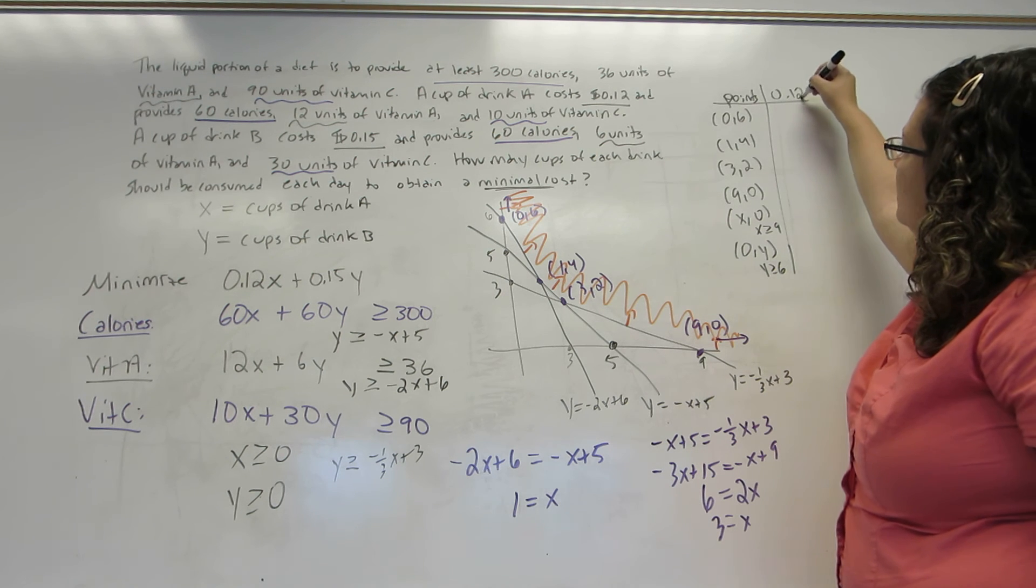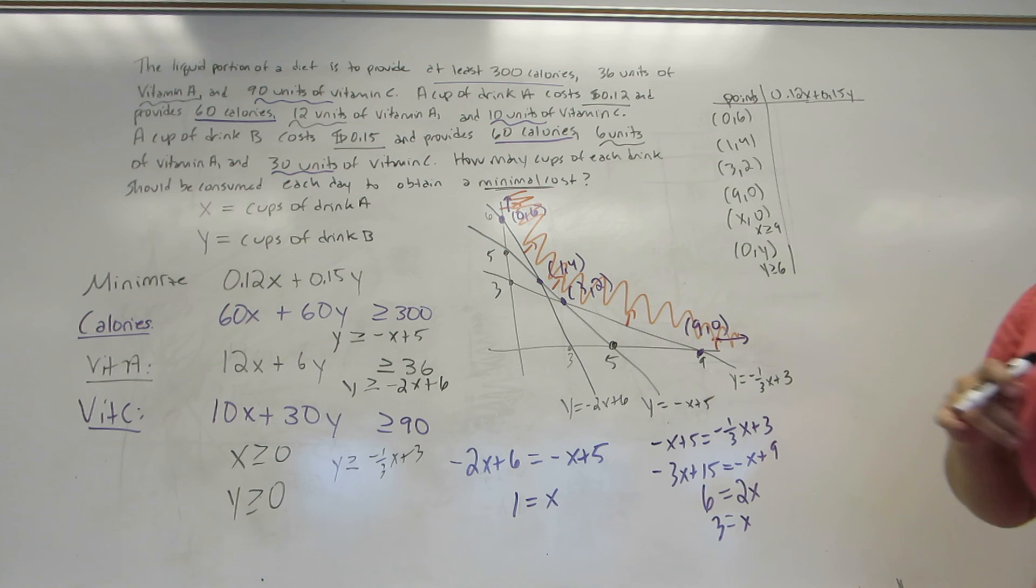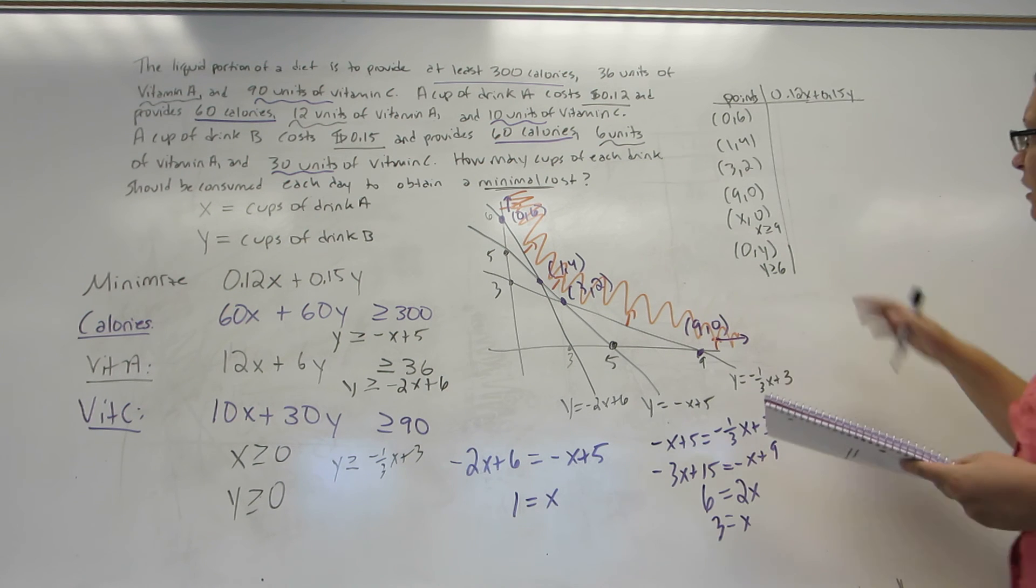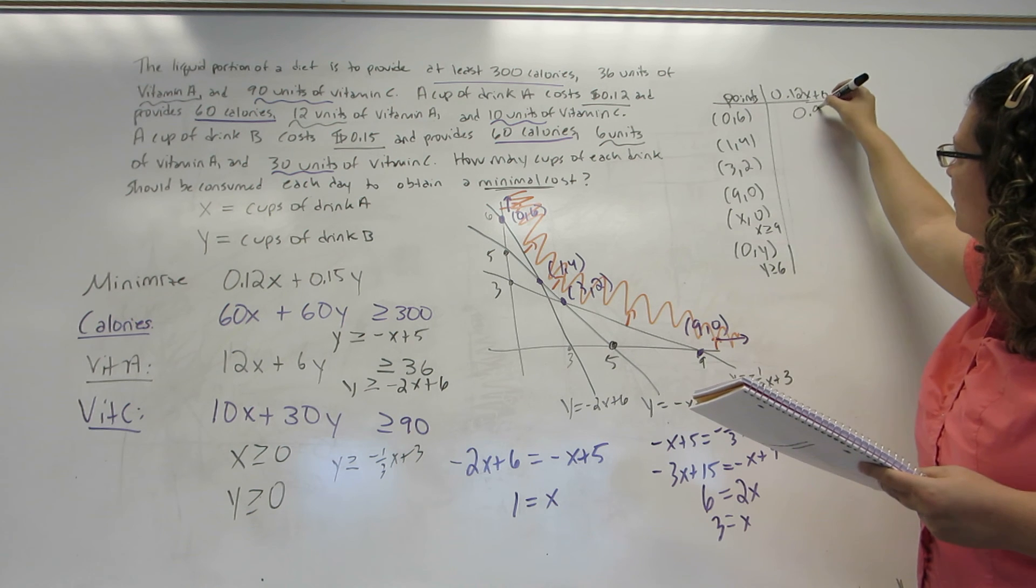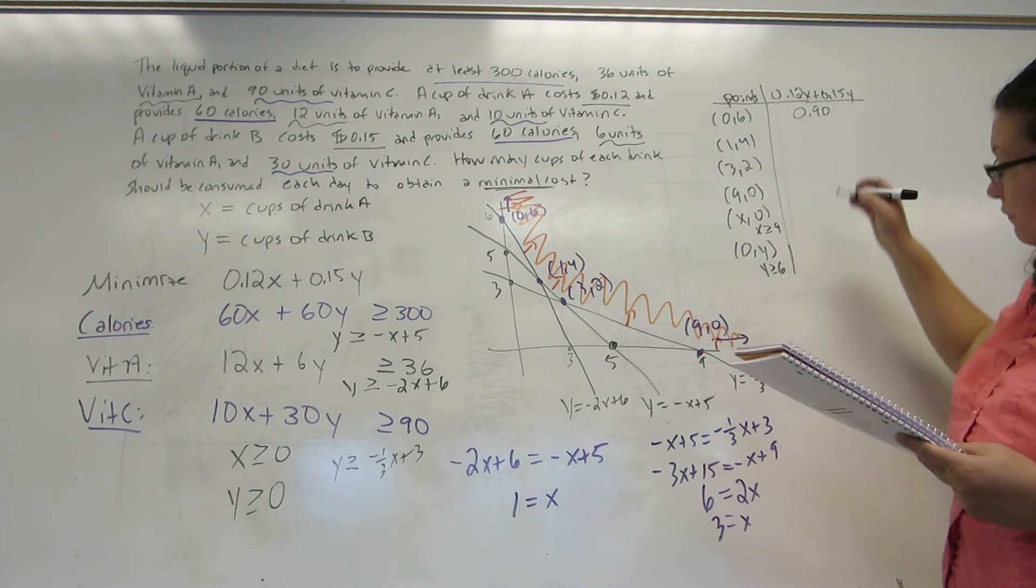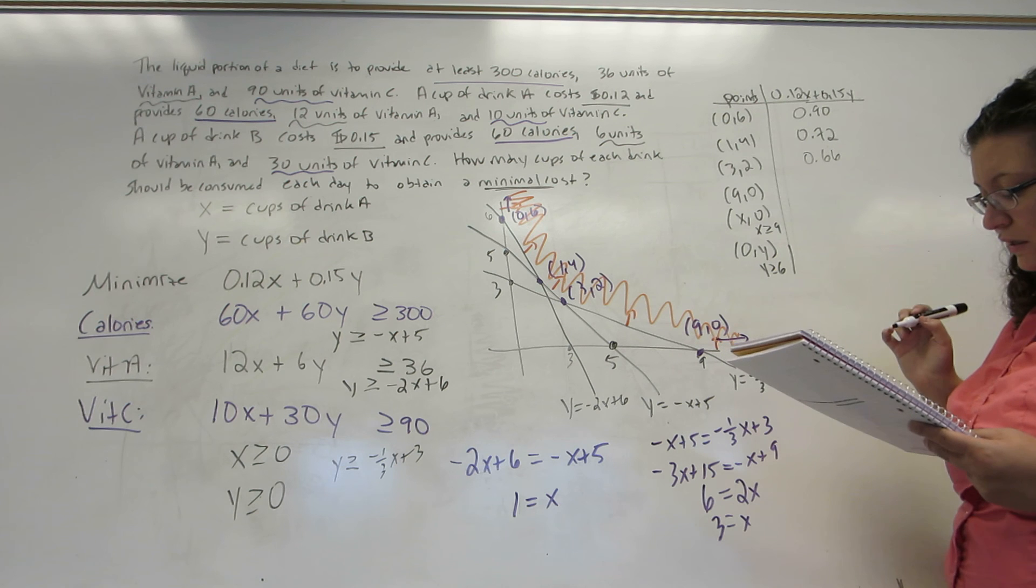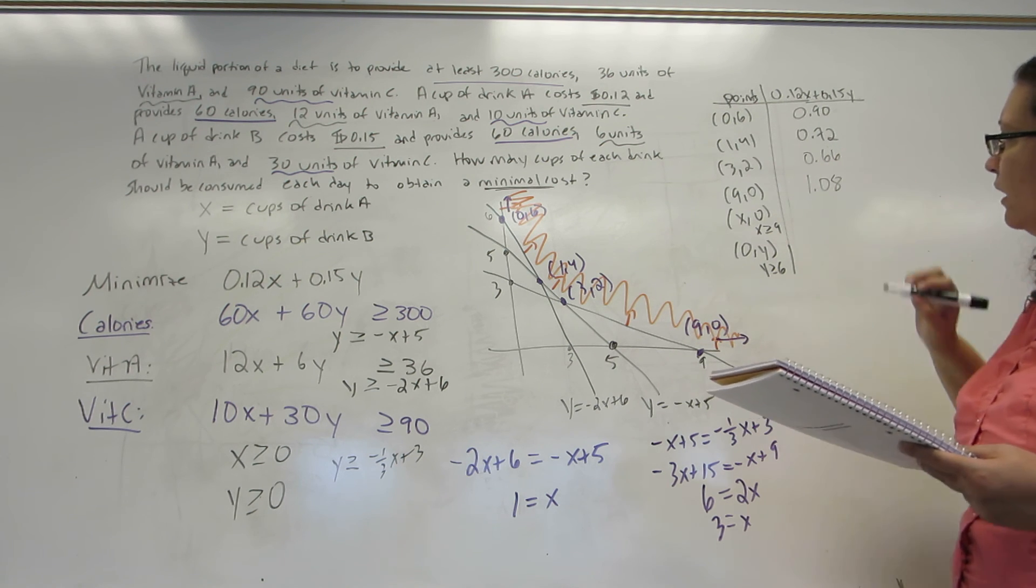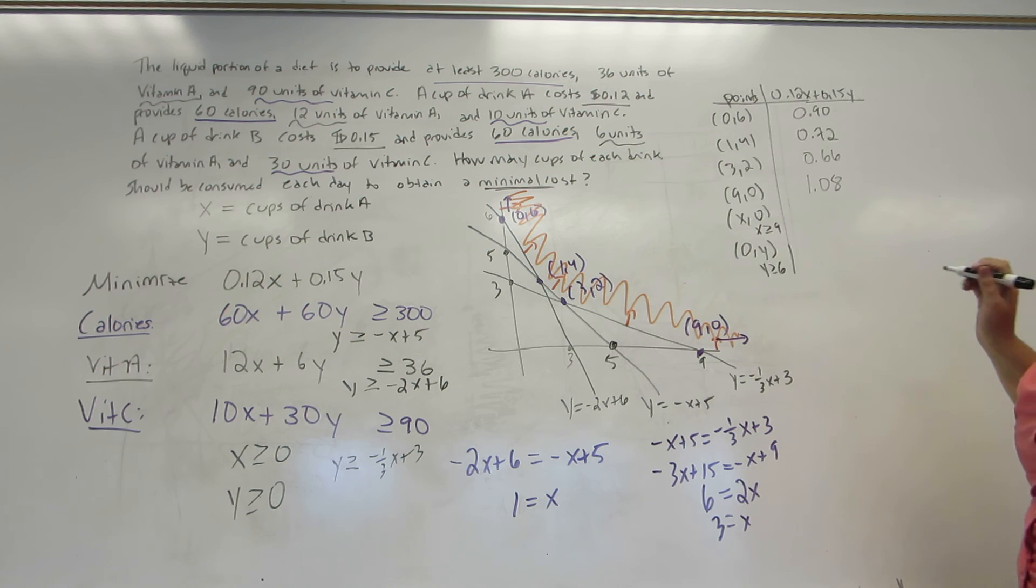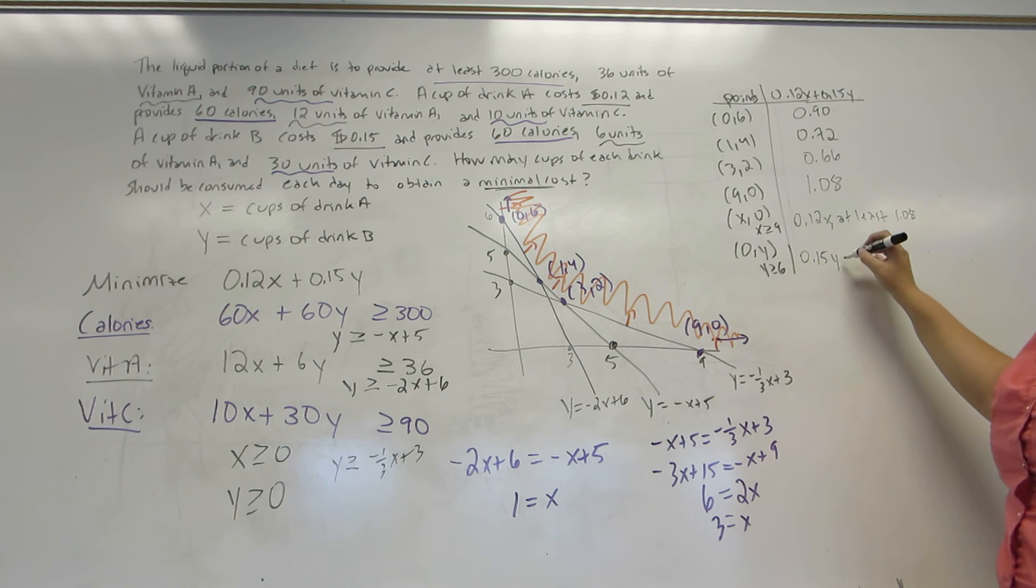So now I'm going to plug all of these into 0.12X plus 0.15Y. This is a little bit of a complicated calculation, so I'm going to cheat having already used my calculator to figure these out. Plugging in (0, 6) gives you 0.9. Plugging in (1, 4) gives you 0.72. Plugging in (3, 2) gives you 0.66. Plugging in (9, 0) gives you 1.08. Plugging in (X, 0) gives you 0.12X, and it is at least 1.08. Plugging in (0, Y) gives you 0.15Y, and it is at least 0.9.